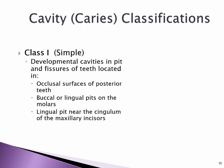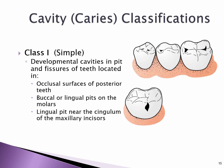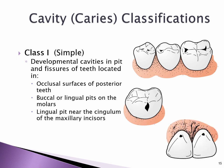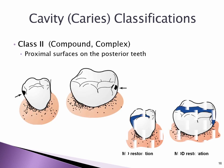Cavity caries classifications. Class I (Simple): developmental cavities in pits and fissures of teeth located in occlusal surfaces of posterior teeth, buccal or lingual pits on the molars, and the lingual pit near the cingulum of the maxillary incisors. Class II (Compound/Complex): proximal surfaces on the posterior teeth.